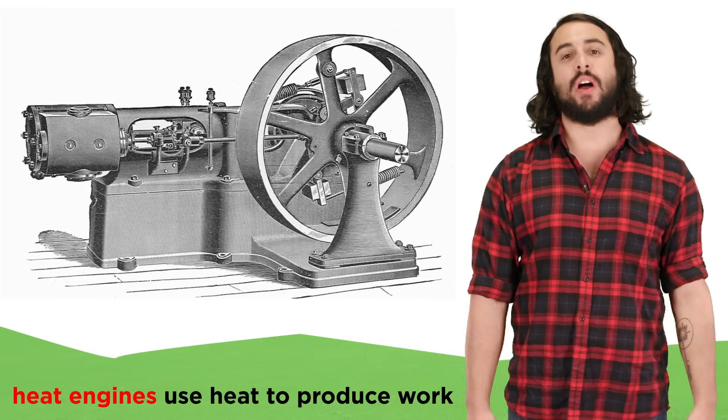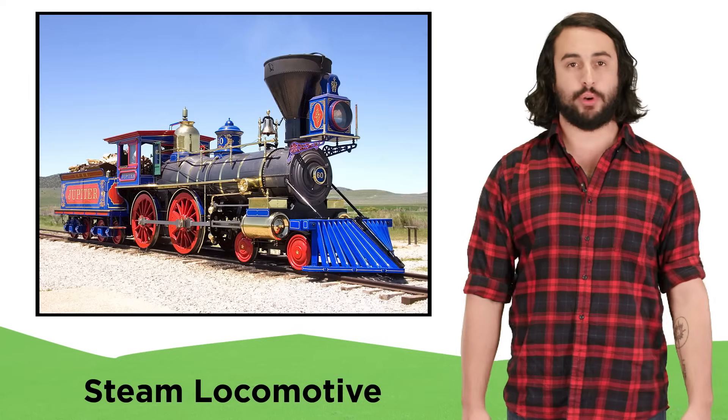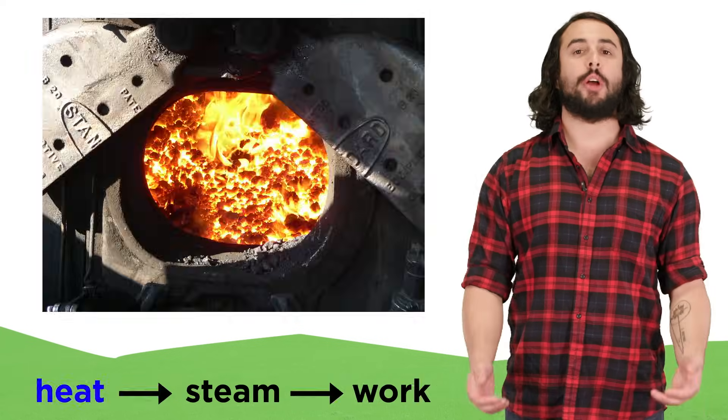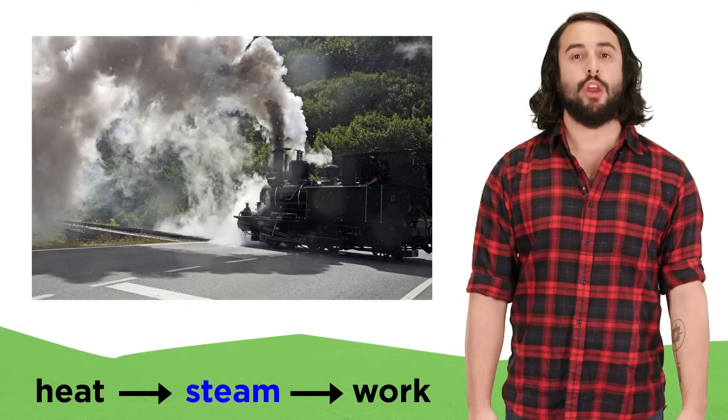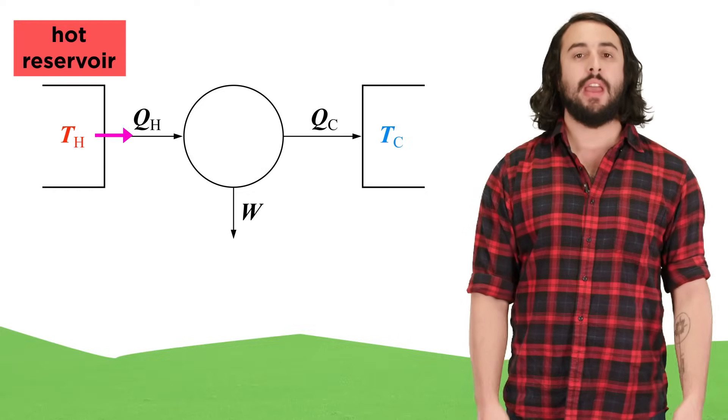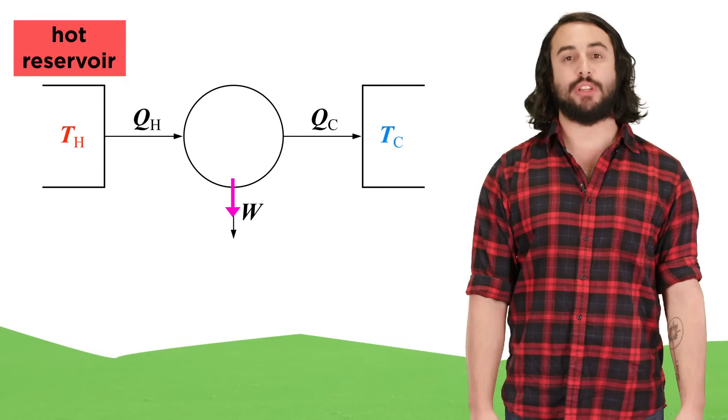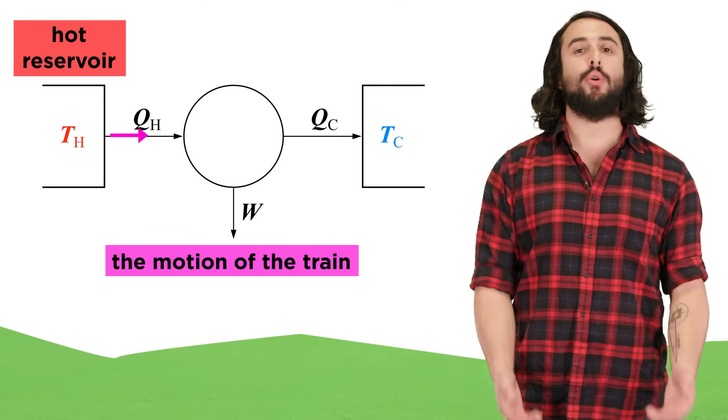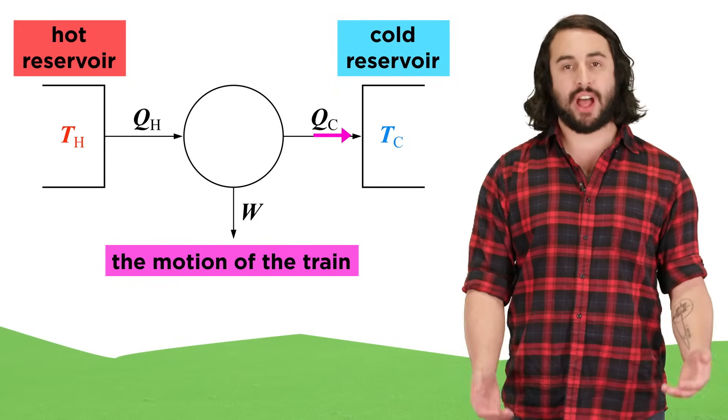A heat engine is one that absorbs heat and uses it to do work, like the steam locomotives of the 19th century, which absorbed the heat from a coal furnace to generate steam, which would then move pistons connected to the train's wheels. Excess heat from the hot reservoir that is not actively used to produce work will move to a cold reservoir, which has a lower temperature than the hot reservoir.